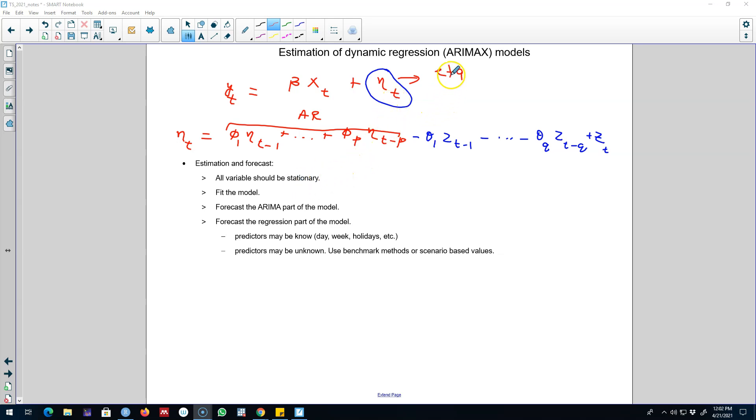Before estimating and fitting these ARIMAX models and forecast, we have to make sure that all of our variables are stationary to begin with. That is, we have to make sure that our y-t variable is stationary and all of the covariates, that is, these x-t variables that we are including in our model are stationary. And if those are stationary, we can go ahead and fit the model in this form and capture the time series dynamics in eta-t.